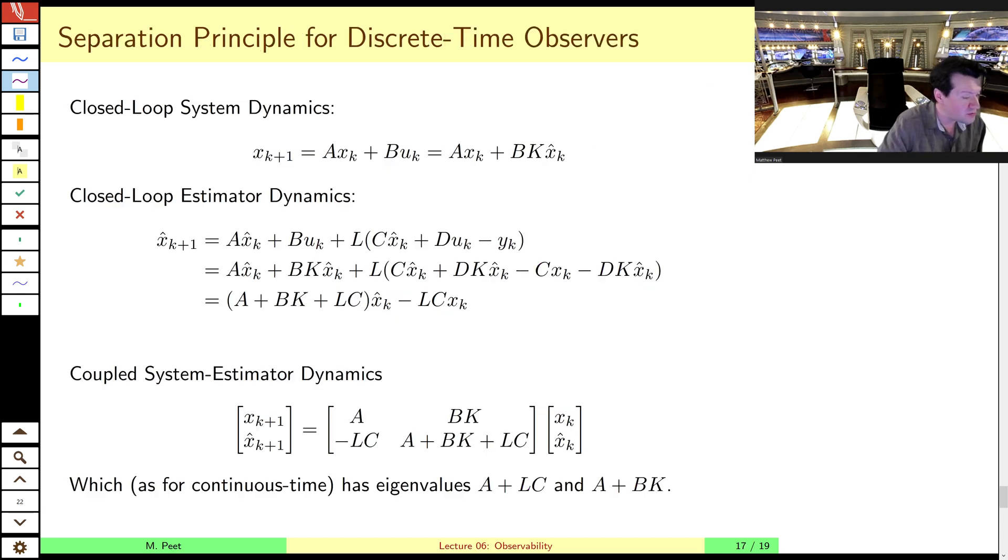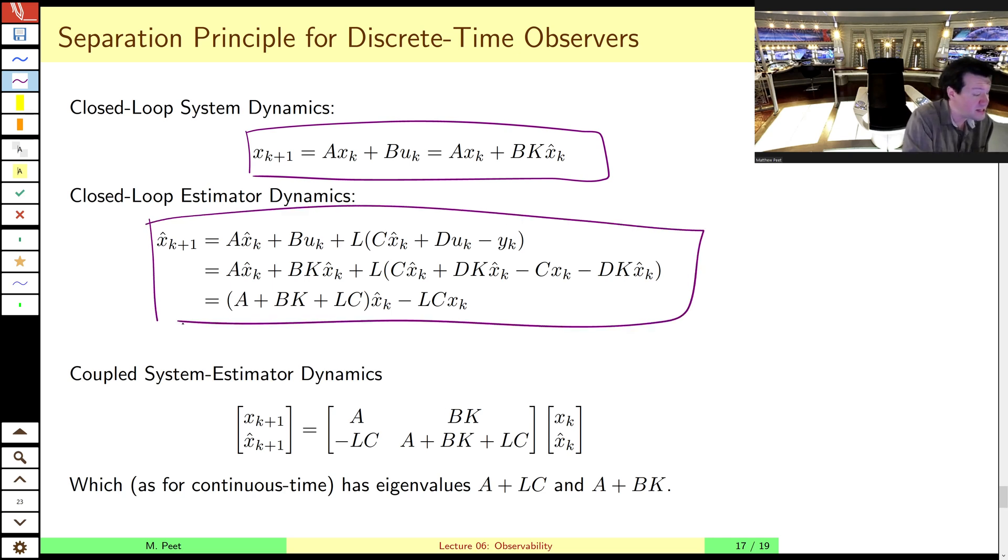And in this case, we have an equivalent to the separation principle, which we used for the design of the Luenberger observer. And we can see that given here, we find the closed loop dynamics of the state. We find the closed loop dynamics of the estimated state. And we just put those in a block augmented state format where we plug here into here. There's the a goes down to there. The bk goes down to there. And likewise, for the estimated state, we've got a plus bk plus lc goes here. And then we have this update term here that goes over there.